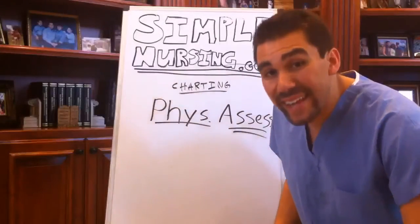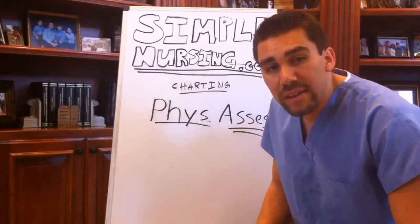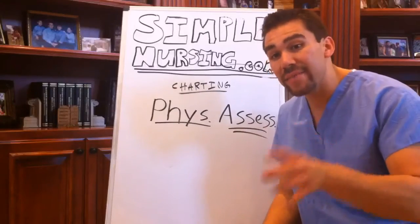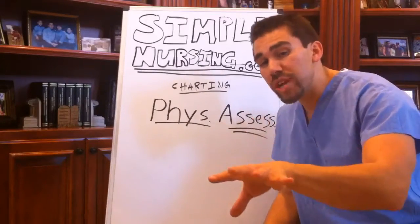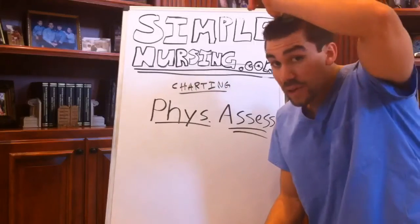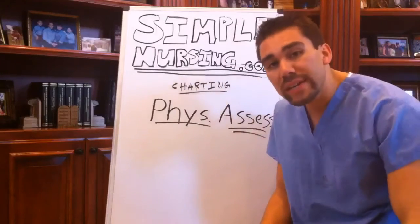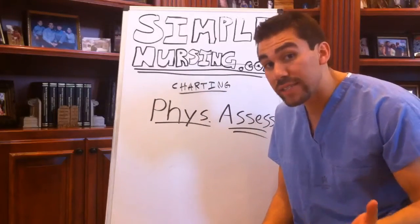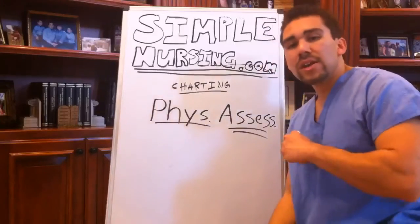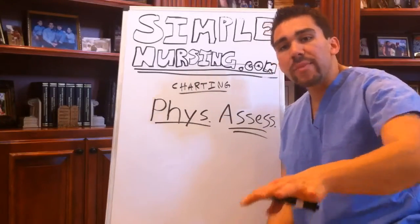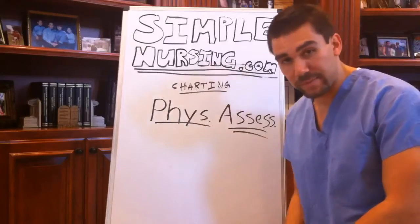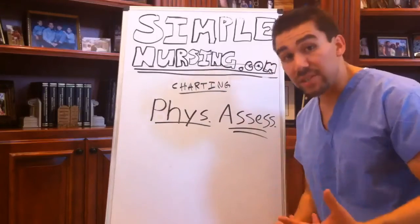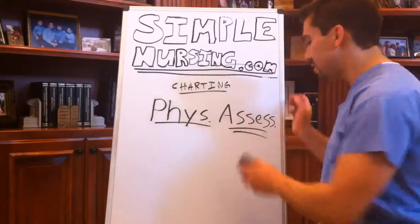Hey guys, Mike Linares here. You're sitting in on a live VIP Inner Circle Tutoring where you, the student, can ask any question you want live on my Ustream channel. It is a fee of $39 a month, and we meet weekly every Saturday morning at 11 a.m. Western California Standard Time. Just like Albertine right here has asked a question about physical assessment, so we're going to be answering how to chart a good, clean, simple physical assessment.